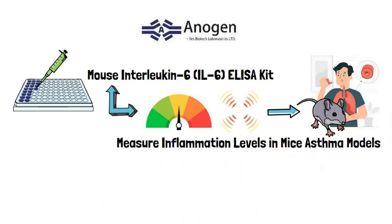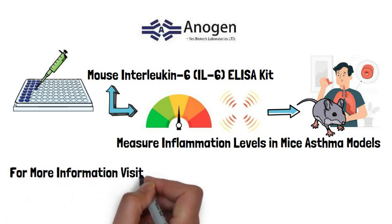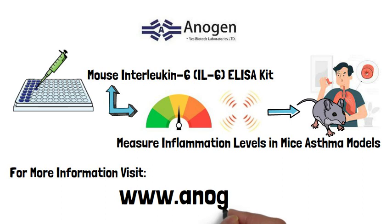Anogen is willing to provide hundreds of high-quality antibodies and ELISA kits to support continuous advancements in biomedical research. For more information, please visit Anogen's website at www.antigen.ca.